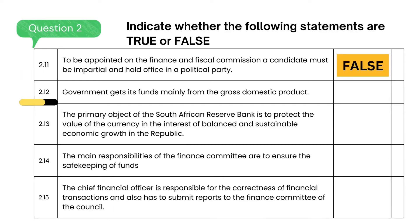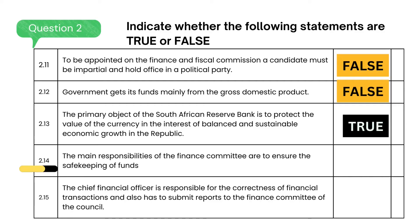The government gets its funds mainly from the gross domestic product — the answer is false. The primary object of the South African Reserve Bank is to protect the value of the currency in the interest of balanced and sustainable economic growth in the Republic — the answer is true. The main responsibilities of the Finance Committee are to ensure the safe keeping of funds — the answer is true. The Chief Financial Officer is responsible for the correctness of financial transactions and also has to submit reports to the Finance Committee of the Council — the answer is true.